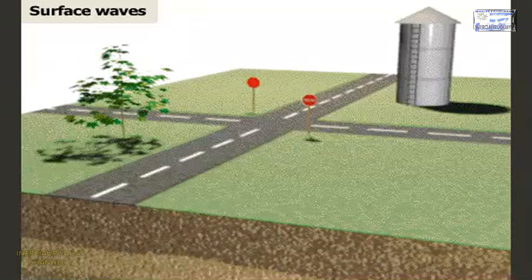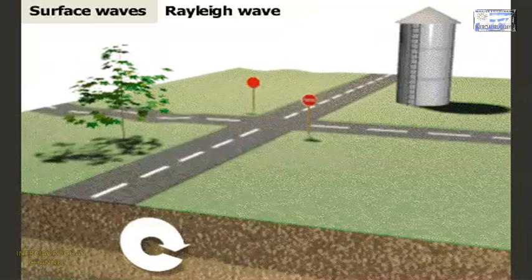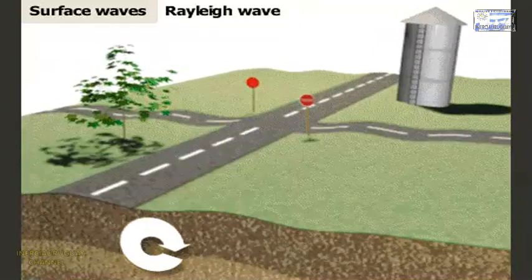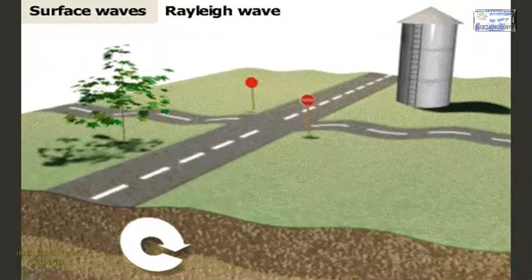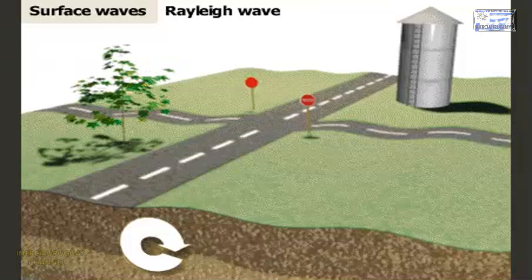The second type of surface wave is called a Rayleigh wave. It moves the surface of the Earth up, forward, down, and back in a circle. It can cause damage by knocking buildings off their foundations.